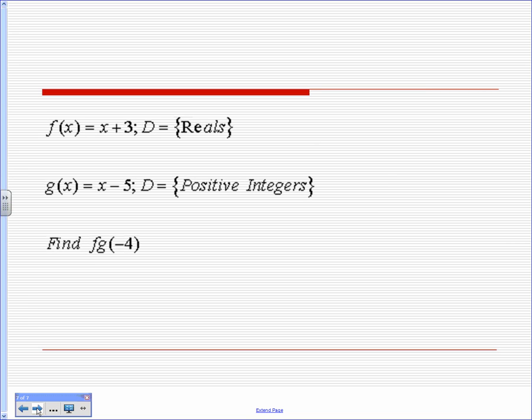Okay, looking at one more example. Can we plug negative 4 into G? No. Why doesn't it work? So what does that mean? So the answer is no solution. Zero with a line through it or your little brackets. Make sense? Any questions there?